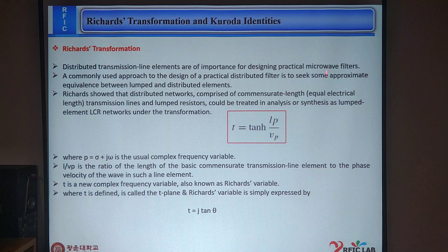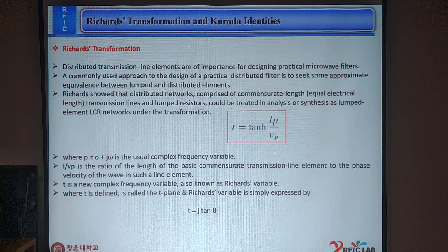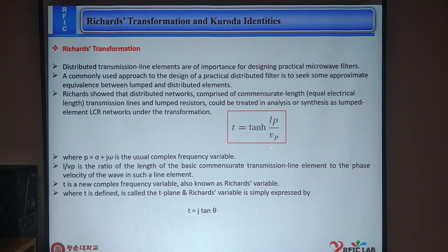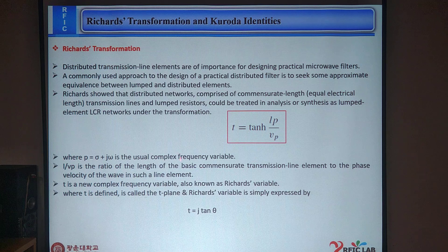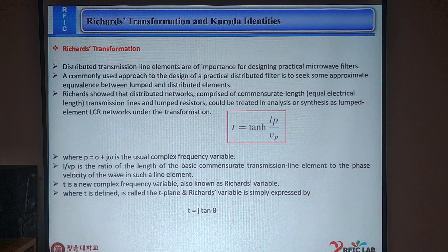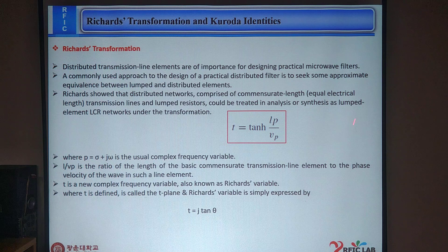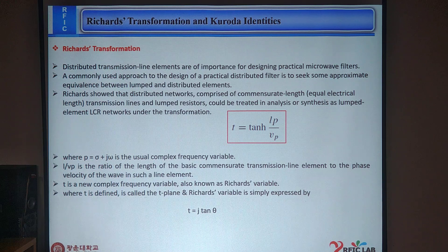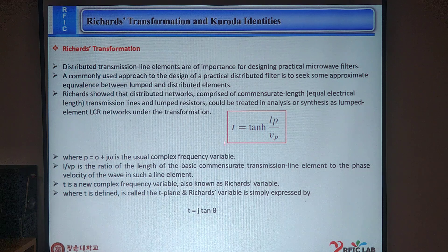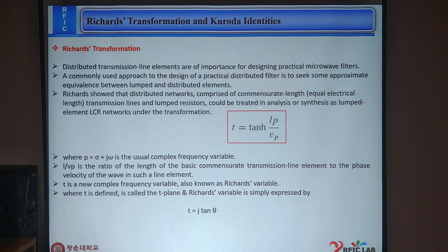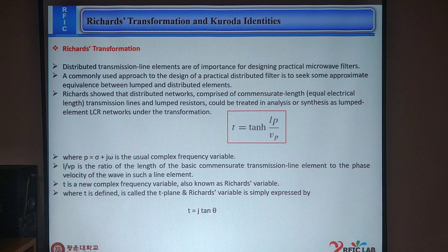It can be expressed by τ = tanh(lp/Vp), where τ and jω is the usual complex frequency variable. lp/Vp is the ratio of the length of the basic commensurate transmission line element to the phase velocity of the phase in such a line element. τ is a new complex frequency variable, also known as Richard variable. Where τ is defined is called a τ-plane and Richard variable. It is simply expressed by τ = ζ·θ.